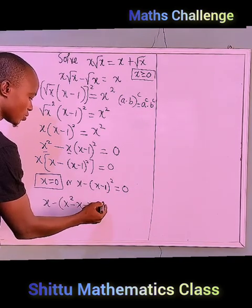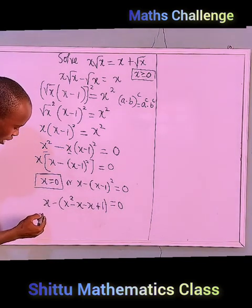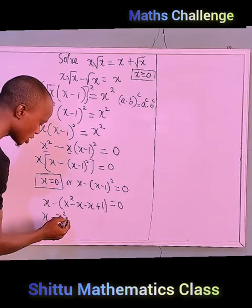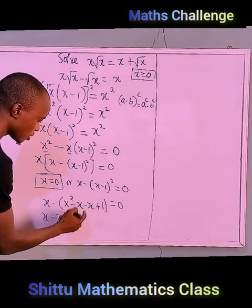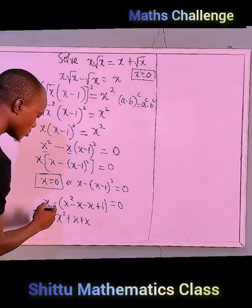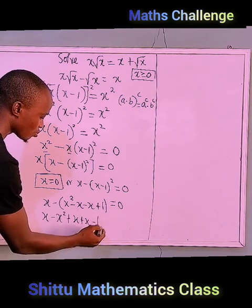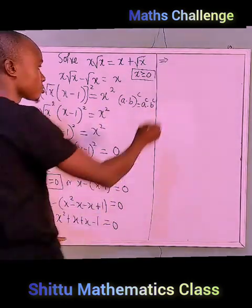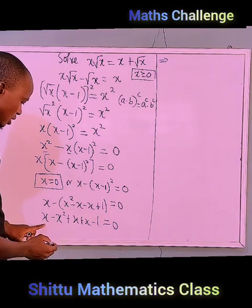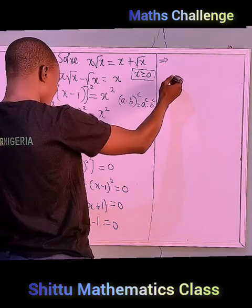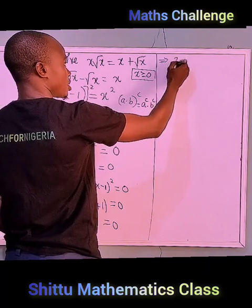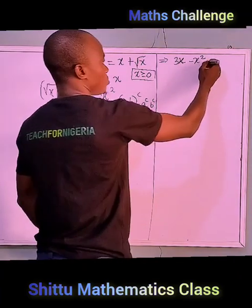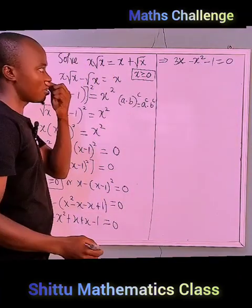So we have x minus [x² minus 2x plus 1] equals zero. Opening the brackets with the minus sign: x minus x² plus 2x minus 1 equals zero. Collecting like terms: x plus 2x is 3x, so we have 3x minus x² minus 1 equals zero.